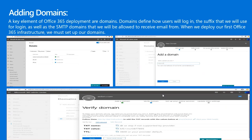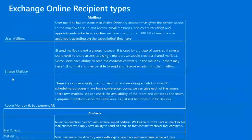Now we'll move on to Exchange Online recipients. We have different recipients in Exchange Online like user mailbox, shared mailbox, mail contact, mail users, public folders, and scheduling mailbox. A user mailbox has an associated Active Directory account that gives the person access to the mailbox to send and receive email messages and create meetings and appointments in Exchange Online. We have a maximum of 100 GB of mailbox size assigned depending on the subscription.